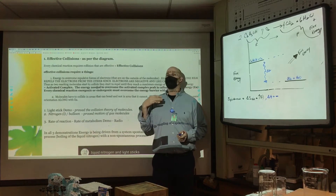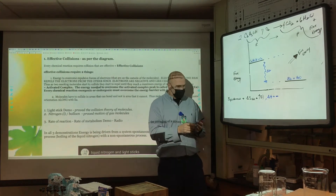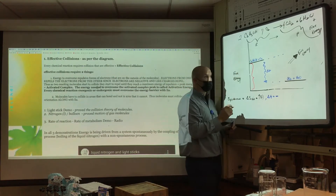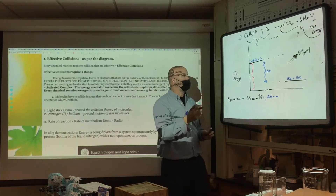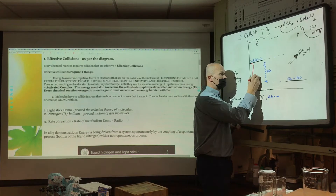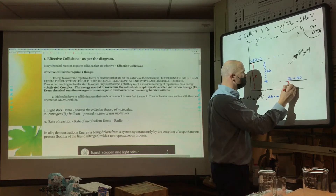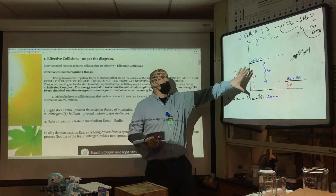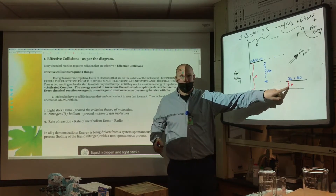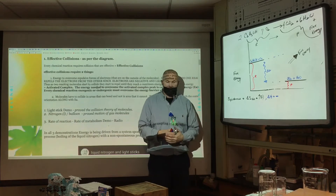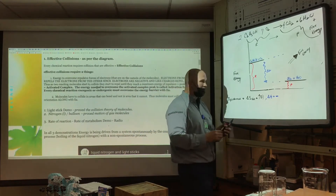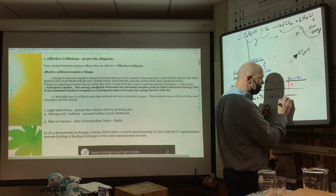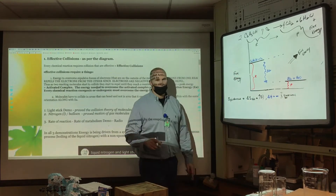So the free energy of the reactants is high and the free energy of the products is lower — and it makes sense. Something that can explode, burn, and give off free energy is not going to have it anymore once it releases it. So this is an example of an exergonic reaction. Delta G negative, spontaneous, exergonic.